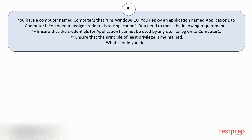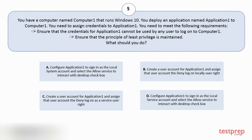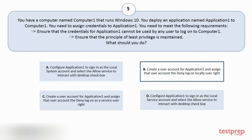Question number five. You have a computer named Computer One that runs Windows 10. You deploy an application named Application One to Computer One. You need to assign credentials to Application One and meet the following requirements: 1. Ensure that the credentials for Application One cannot be used by any user to log on to Computer One. 2. Ensure that the principle of least privilege is maintained. What should you do? Option A: Configure Application One to sign in as the local system account and select the Allow Service to interact with desktop checkbox. The correct answer is option B.